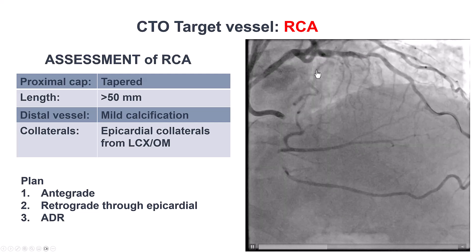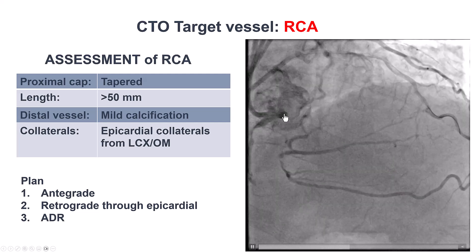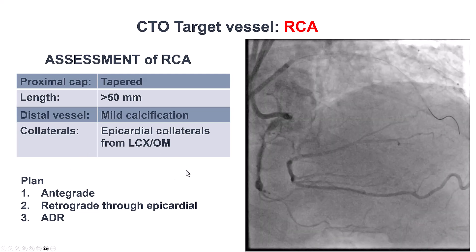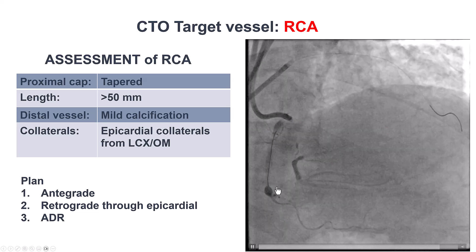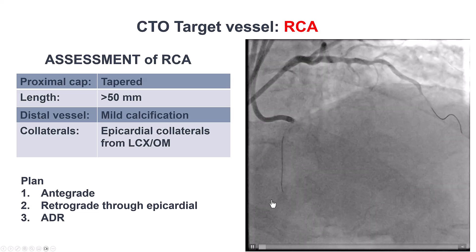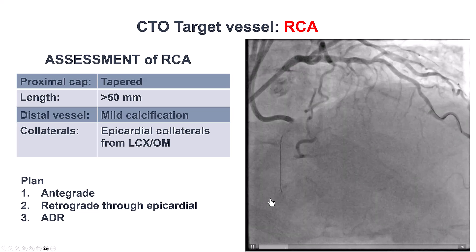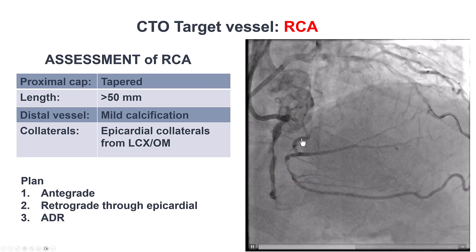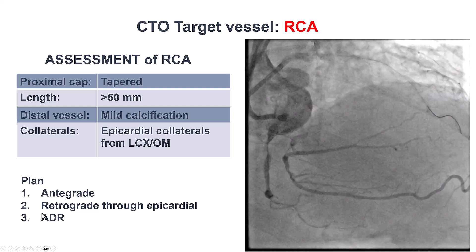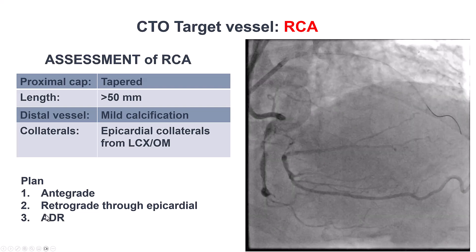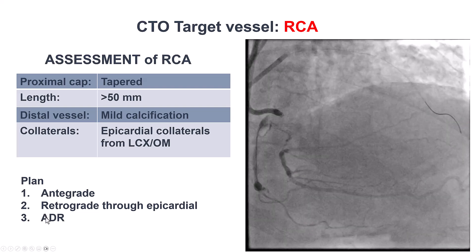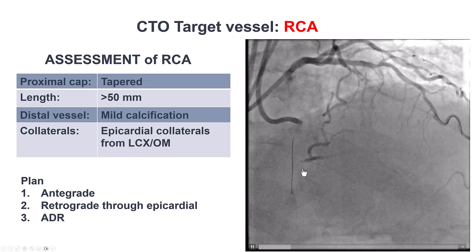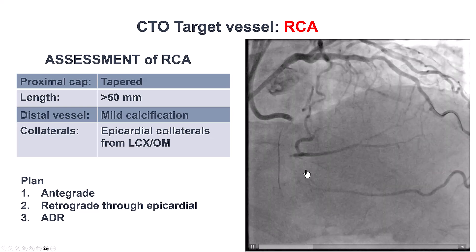Therefore, our plan was to try first antegrade wiring, since we had a clear proximal cap. If that didn't work, the plan was to try retrograde via the epicardial, leaving antegrade dissection re-entry as the last resort because of the bifurcation of the distal cap.